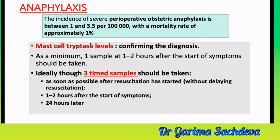The incidence of severe perioperative obstetric anaphylaxis is 1 to 3.5 per 100,000 patients with a mortality rate of around 1%. For diagnosis, mast cell tryptase is performed. You must take three samples: one as soon as possible after resuscitation starts, a second one to two hours after onset of symptoms, and a third 24 hours later. At minimum, one sample should be taken at one to two hours after the start of symptoms.